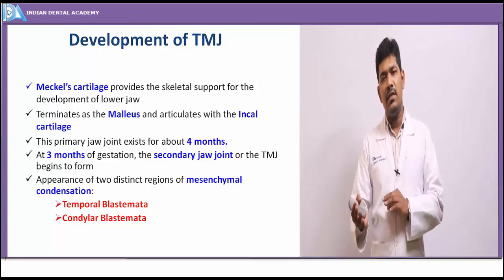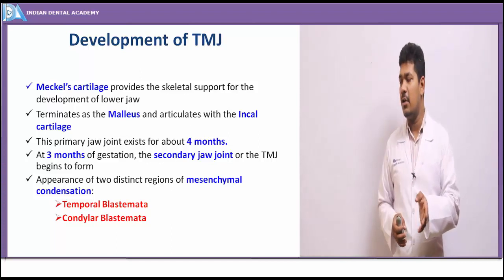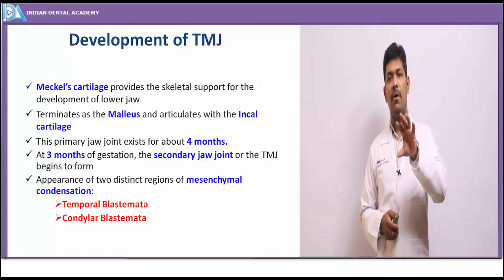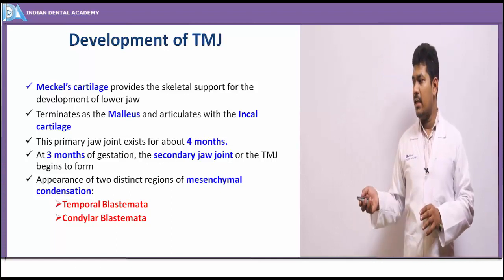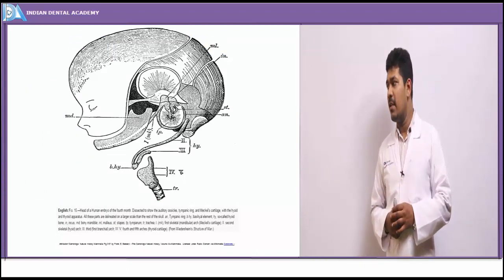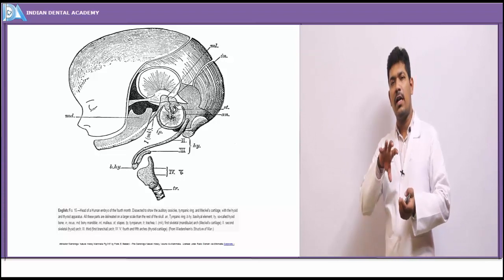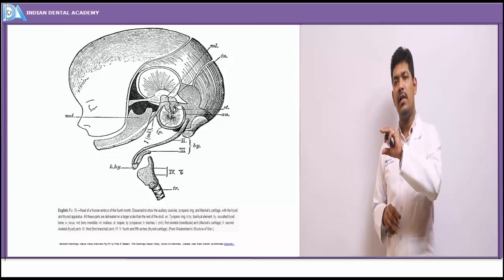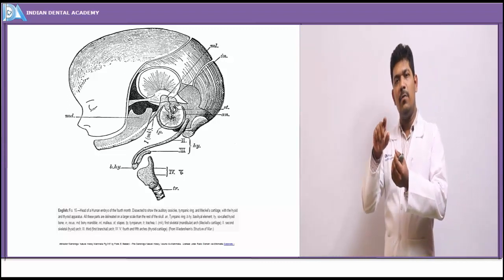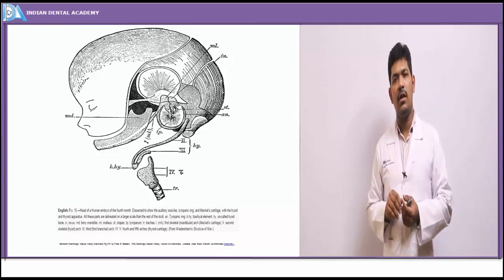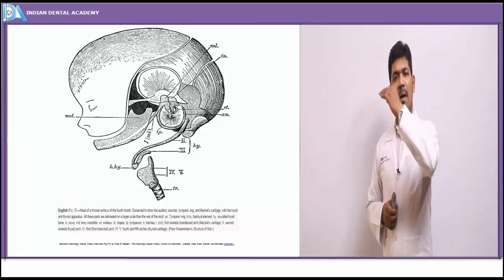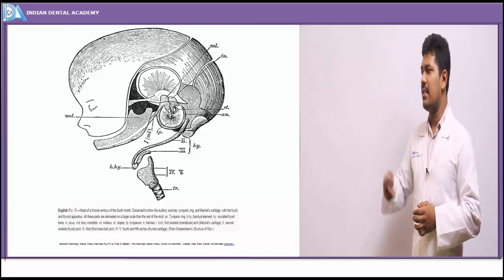After the primary jaw development, the secondary jaw development starts, taking place via two kinds of mesenchymal condensations found in the temporal region and the condylar region. In the neonatal head there are mesenchymal condensations both in the condylar and temporal regions. At later developmental stages, a slight split occurs at the superior surface of the condylar and inferior surface of the temporal region, and this slit further develops into the upper and lower joint cavities.